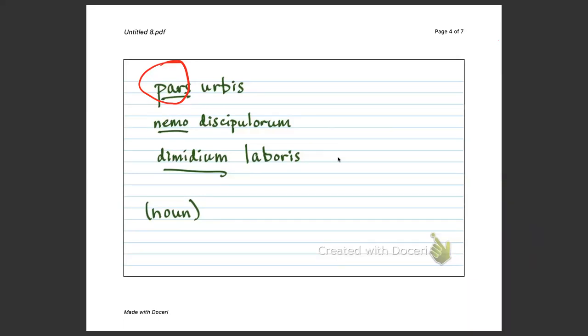So, here we've got paris urbis, part of the city. And here we've got nemo discipulorum, no one of the students, or none of the students.